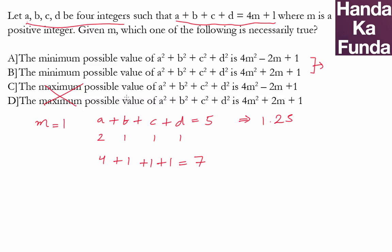Now, if I get it from option a, a is my answer. If I get it from option b, b is my answer. Let's see what I get from option a. I get with putting m as 1, 4 minus 2 plus 1, I get a 3, which means a is also not my answer.